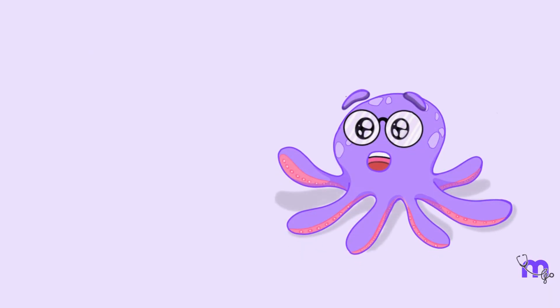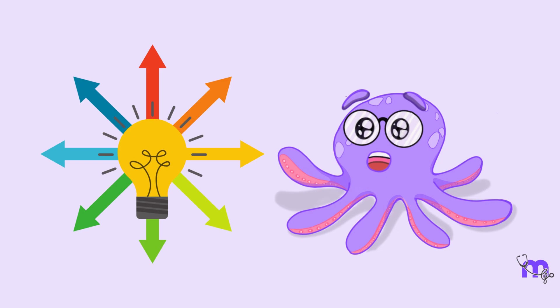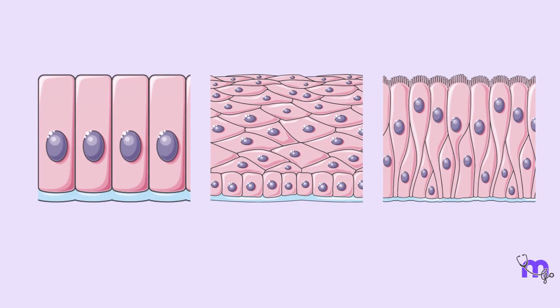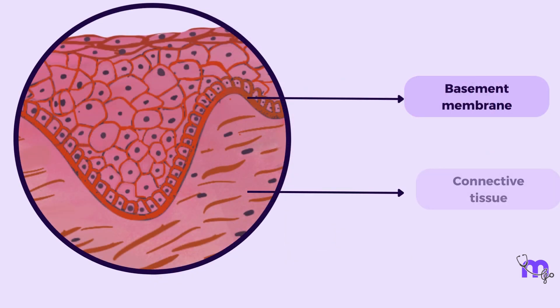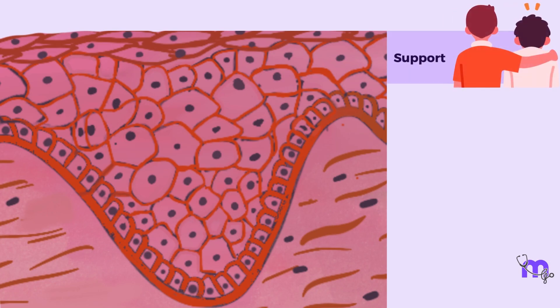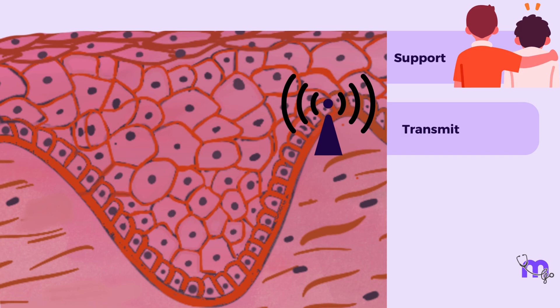Before we discuss the features of the different types of epithelia, let us talk about the one thing common to all of them, which is the basement membrane they rest on. The thin layer of extracellular matrix holds the epithelial cells down, attaching them to the connective tissue beneath it. It offers support, helps transmit signals towards and away from the epithelial cells, and also acts as a mechanical barrier.